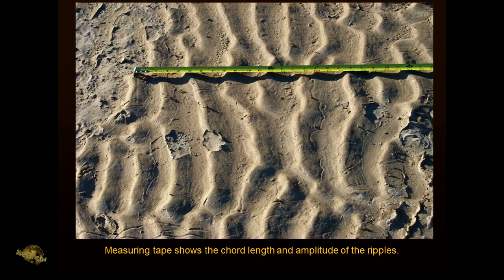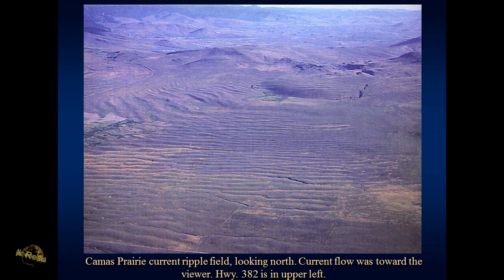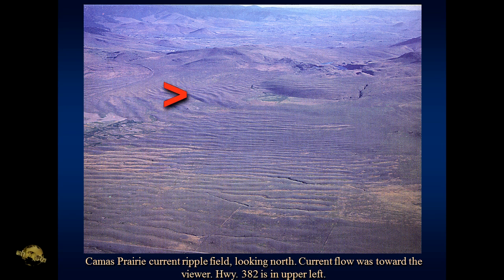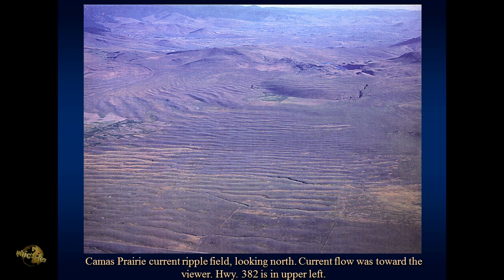There's a lot of what is called paleocurrent indicators that you can learn to read when you're out there looking. Now we get to this, and we see scale invariance. Here you see a highway right here. What you're seeing there are current ripples whose amplitude in this area is 30 to 50 feet, and whose wavelength is 200 to 300 feet. Could we extrapolate from that and come up with an indication of how deep the water was and how fast it was moving? The answer is yes, and that's what I'm trying to learn — how to manipulate those formulas.